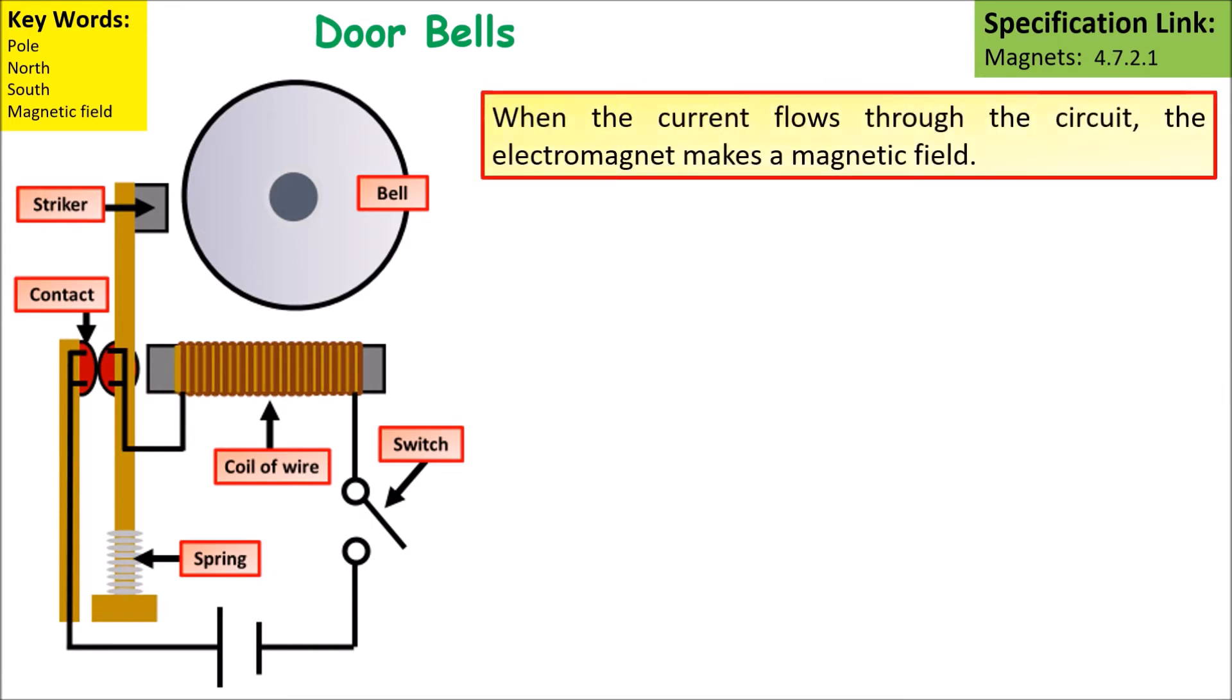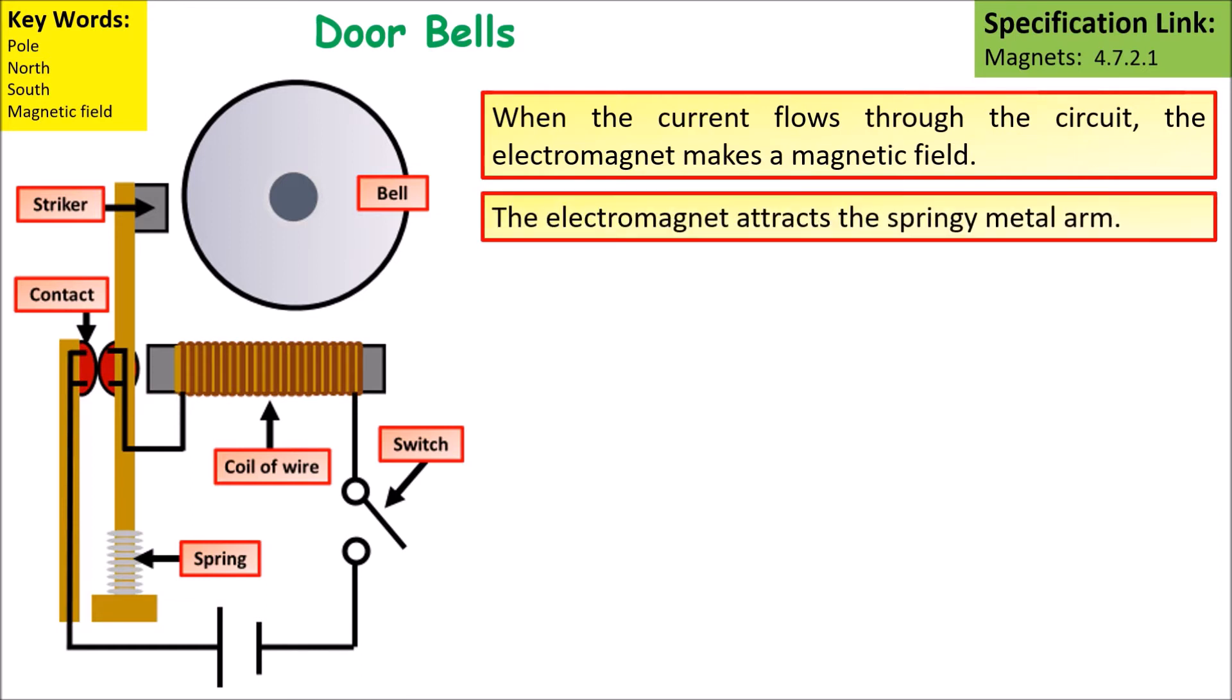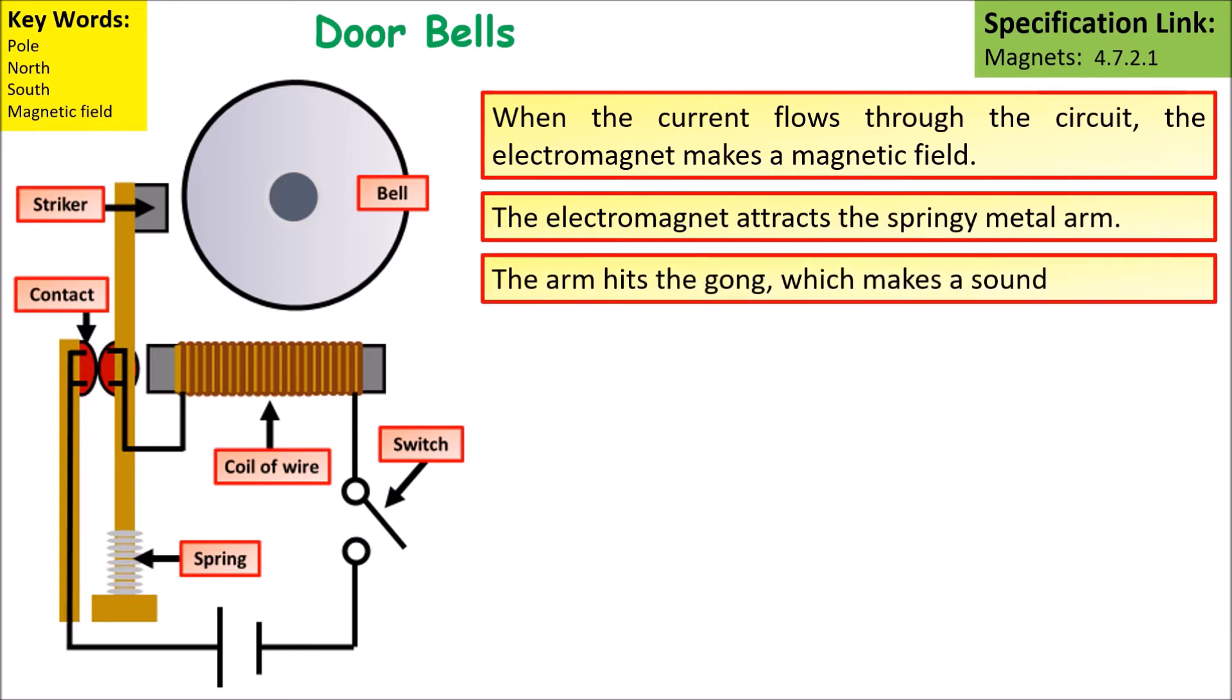The first use of an electromagnet that we want to look at is a doorbell. When the current flows in the circuit, the electromagnet generates a magnetic field. This electromagnet attracts the springy metal arm towards it. The arm hits the gong which makes a sound.